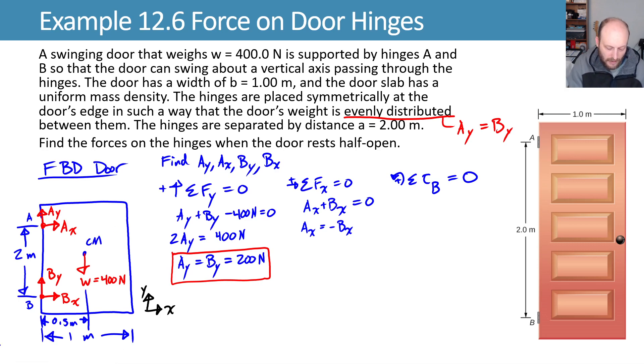AX is trying to spin clockwise, which is a negative torque. So we have negative times two meters times our unknown AX. Then we have the weight that's acting on its perpendicular lever arm of 0.5 meters that's trying to spin clockwise as well, so it's also negative times 0.5 meters times the weight, which we know of 400 newtons, and that sums to zero.